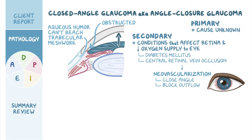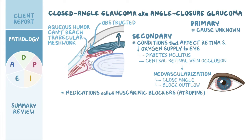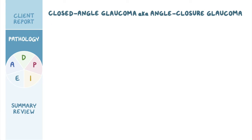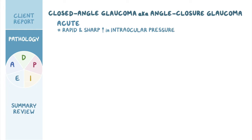Another secondary cause of closed angle glaucoma are medications called muscarinic blockers, such as atropine. These medications cause mydriasis, or pupil dilation, thus pushing the iris into the angle and reducing the outflow. Closed angle glaucoma can be acute, in which case the blockage causes a rapid and sharp increase in intraocular pressure, and this is an ophthalmologic emergency.